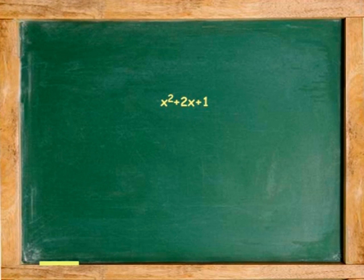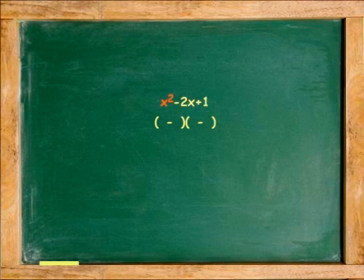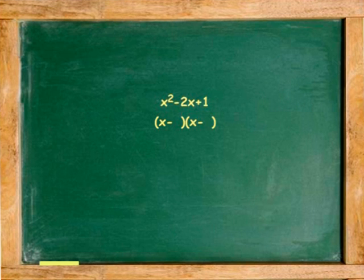To factor a perfect trinomial square, set up two binomials in parentheses. If the middle term is addition, both binomials are additions. If the middle term is subtraction, both binomials are subtraction. Find the square root of the first and third terms, placing the square root of the first square to start each parenthesis and the square root of the second square to end each parenthesis.